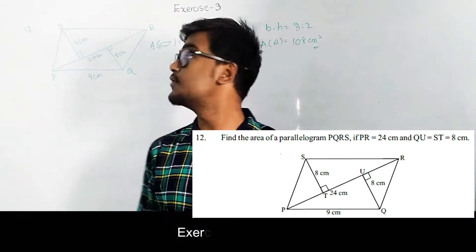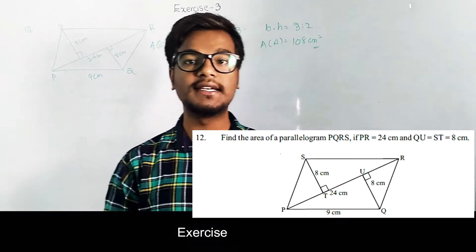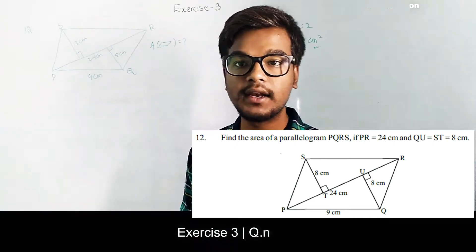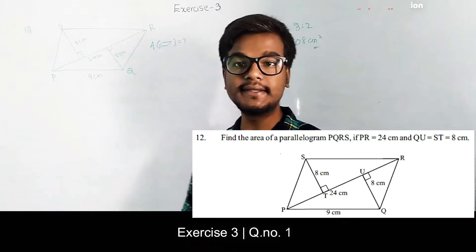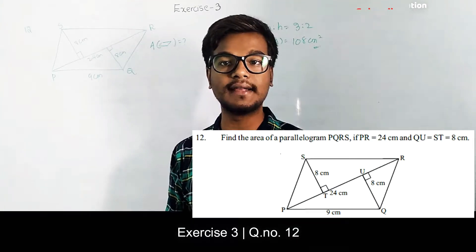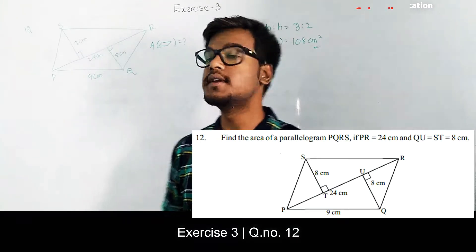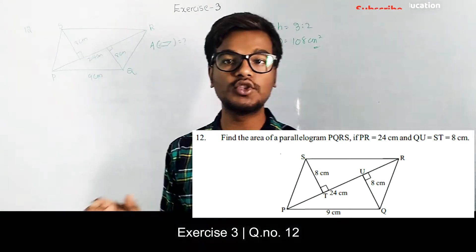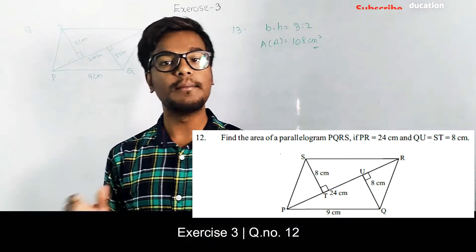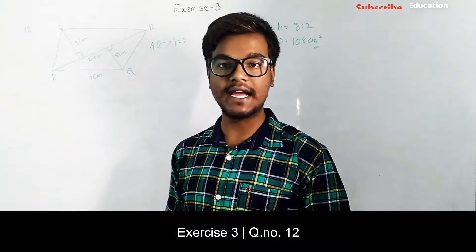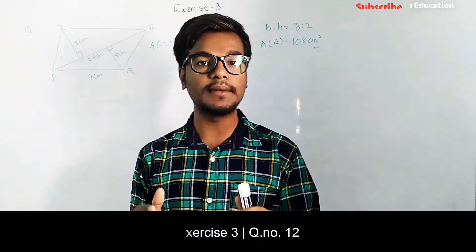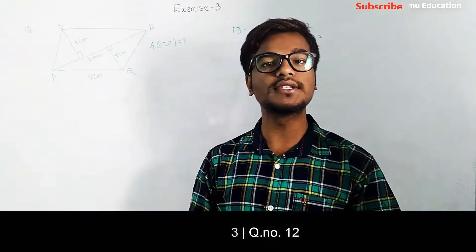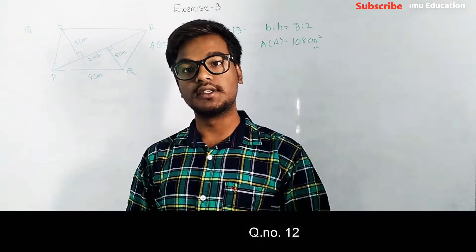In this module we are going to discuss solutions for questions 12 and 13. For question 12, a parallelogram PQRS is given and we need to find its area. The area of a parallelogram is base times height, but since height is not given directly, the parallelogram is split into two triangles and we sum their areas.